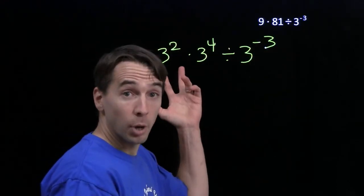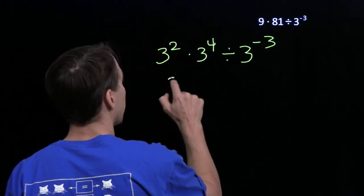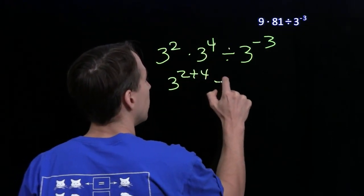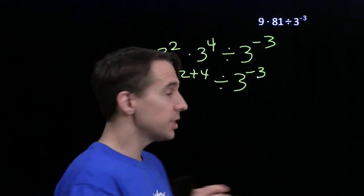And now we just use our product of powers with the same base. We multiply these two. We get 3 to the 2 plus 4 divided by 3 to the negative 3. 2 plus 4 is 6.